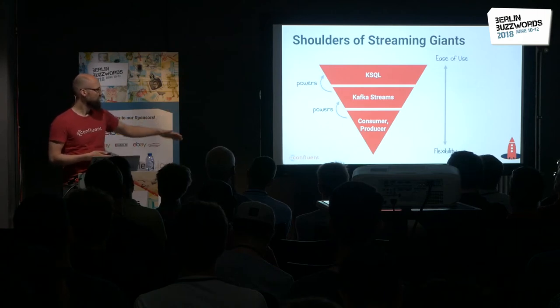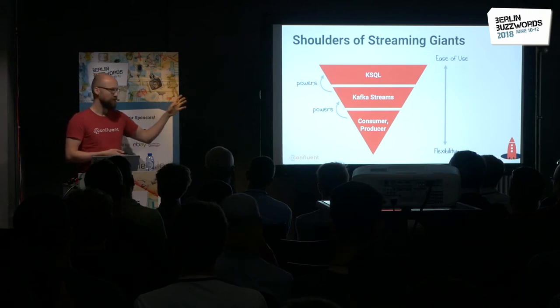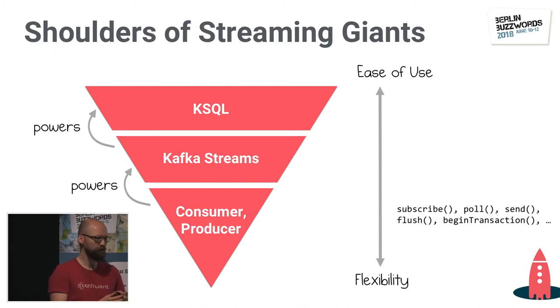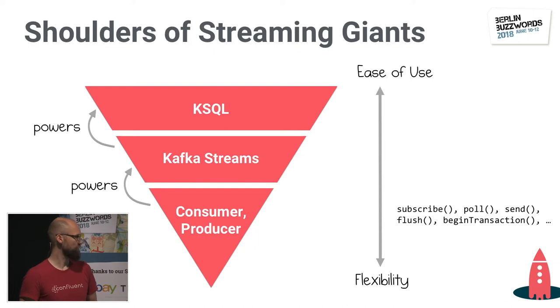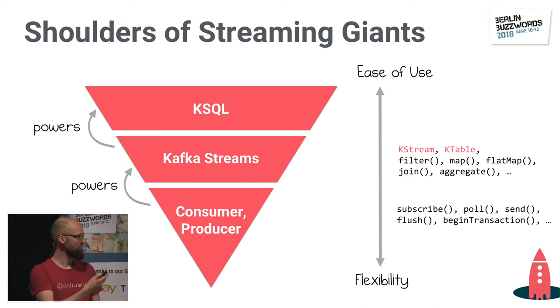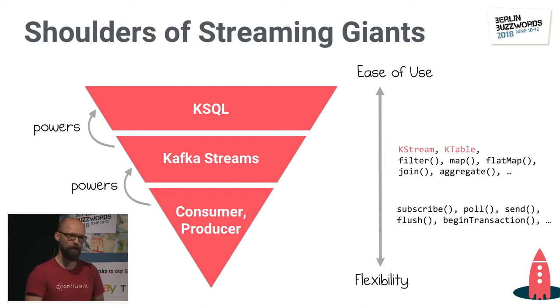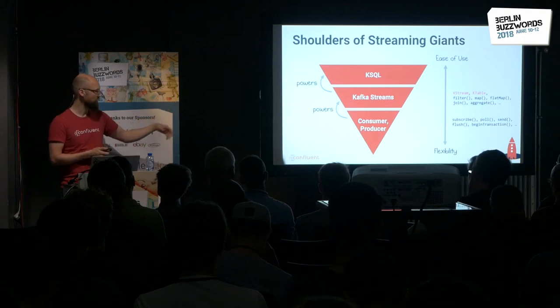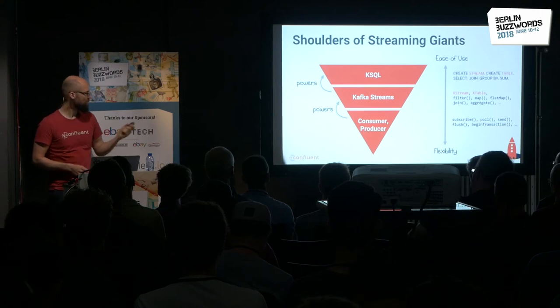The higher up you go in this pyramid, the more ease of use you get at the expense of flexibility. If you're using the Kafka Consumer or Producer, you're working on the nuts and bolts of Kafka — it's like a soldering iron. Going further up the stack you get Kafka Streams, which gives you two APIs: a functional programming style DSL and an imperative Processor API. On top of that is KSQL, which gives you a SQL way to express your processing logic.